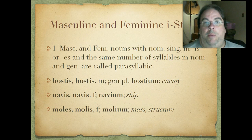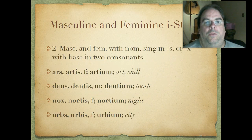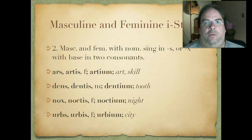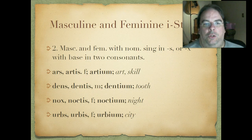Keep in mind for all third declensions the nominative can have all kinds of forms, but the genitive singular always ends in IS. In some cases for these I-stems the nominative singular can end in ES or IS. The second group is masculine and feminine with a nominative singular ending in S or X, but most importantly the base has two consonants. Like ars, artis — drop the IS, you get R-T, two consonants. Genitive plural: artium — art or skill. Also dens, dentis — genitive plural dentium, meaning tooth. Nox, noctis — noctium in the genitive plural, meaning night. And urbs, urbis — urbium in the genitive plural — city, where we get urban from.